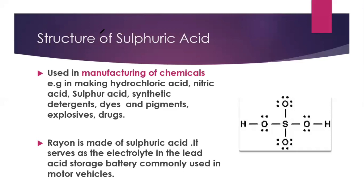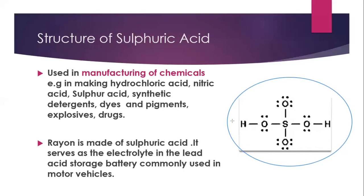Structure of Sulfuric Acid. As you can see here, this is the structure of Sulfuric Acid. It contains 2 atoms of Hydrogen, 4 atoms of Oxygen, and a single atom of Sulfur.